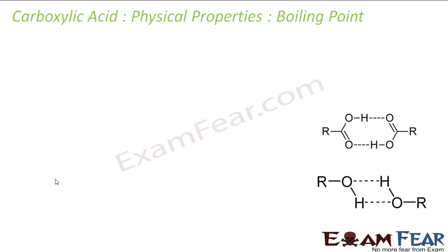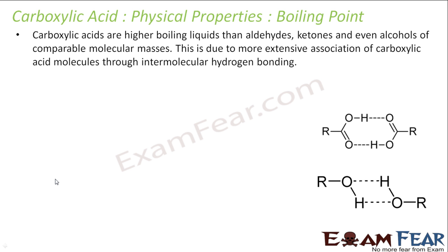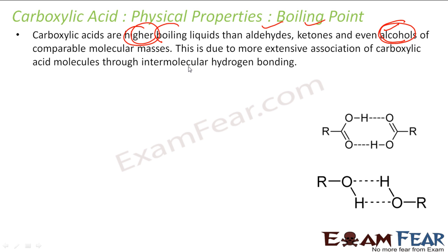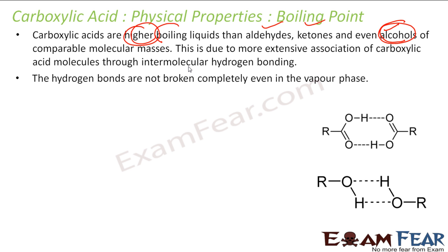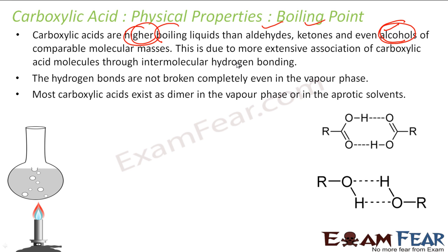Now let's talk about the boiling point. Carboxylic acids have very, very high boiling points — even higher than alcohols, aldehydes, and ketones. Why? Because the extent of hydrogen bonding in carboxylic acids is very, very high, and these hydrogen bonds are not completely broken even in the vapor stage. So carboxylic acids exist as dimers.